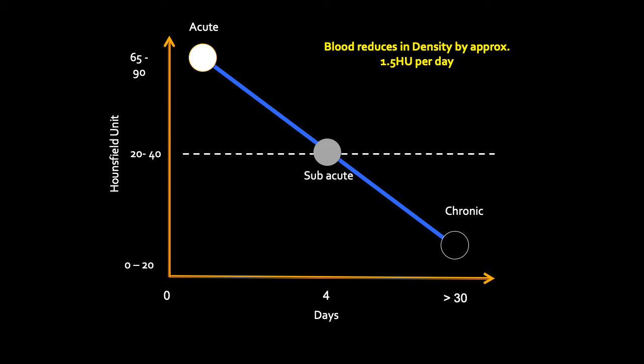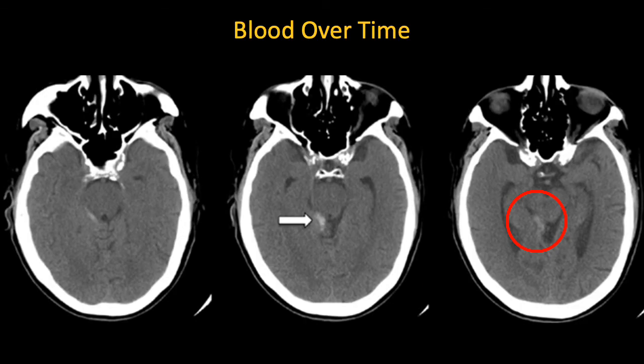After four days it starts to become sub-acute, when the Hounsfield unit falls to between 20 and 40. After more than 30 days it will become the same density as CSF, which is essentially water, with a density around 0 to 30 Hounsfield units.